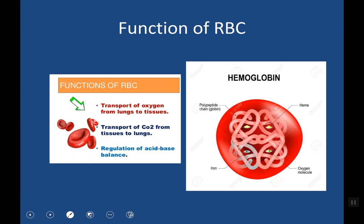Oxygen transport is carried by the hemoglobin, which is present in the RBC. Hemoglobin is basically composed of a polypeptide chain and four molecules of heme, which contain iron. So each molecule of hemoglobin can carry four molecules of oxygen.